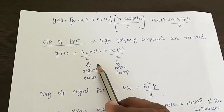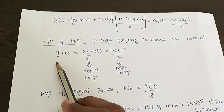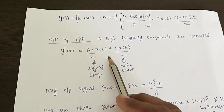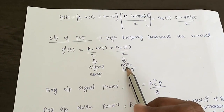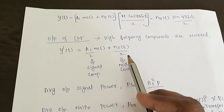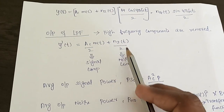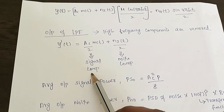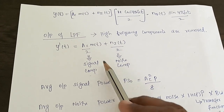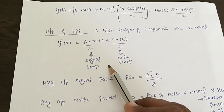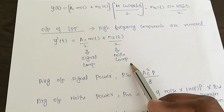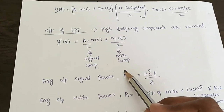The output of the low pass filter, represented as Y dash of T, is Ac/2·M(t) + NI(t)/2. This is the final output of the DSBSC receiver, which contains a signal component and a noise component. We now need to find output signal power, output noise power, and then their ratio.